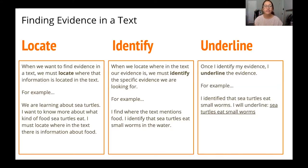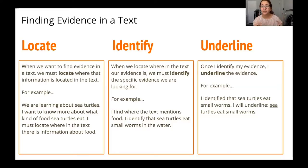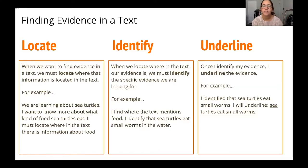For example, if we were learning about sea turtles and I want to know more about the kind of food they eat, I must locate where in the text there's information about food. Maybe I remember reading about food in the very first paragraph, so I have to locate that first paragraph. Once I've located the area where the information is, next I must identify the evidence — locate where in the text our evidence is, then identify the specific evidence we are looking for.